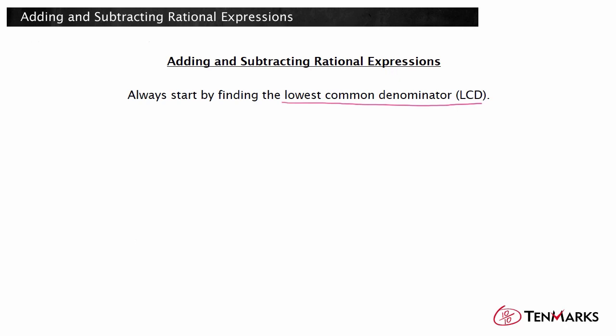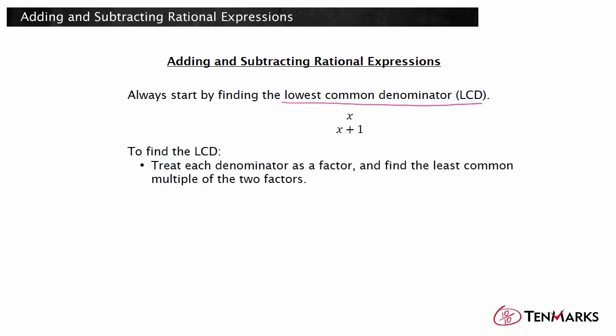is the least common multiple of the two denominators. When finding the LCD of two denominators that contain algebraic expressions such as x or x plus 1, you may treat each expression as a factor. You can start with simple numbers like fractions 3 fifths and 2 thirds.